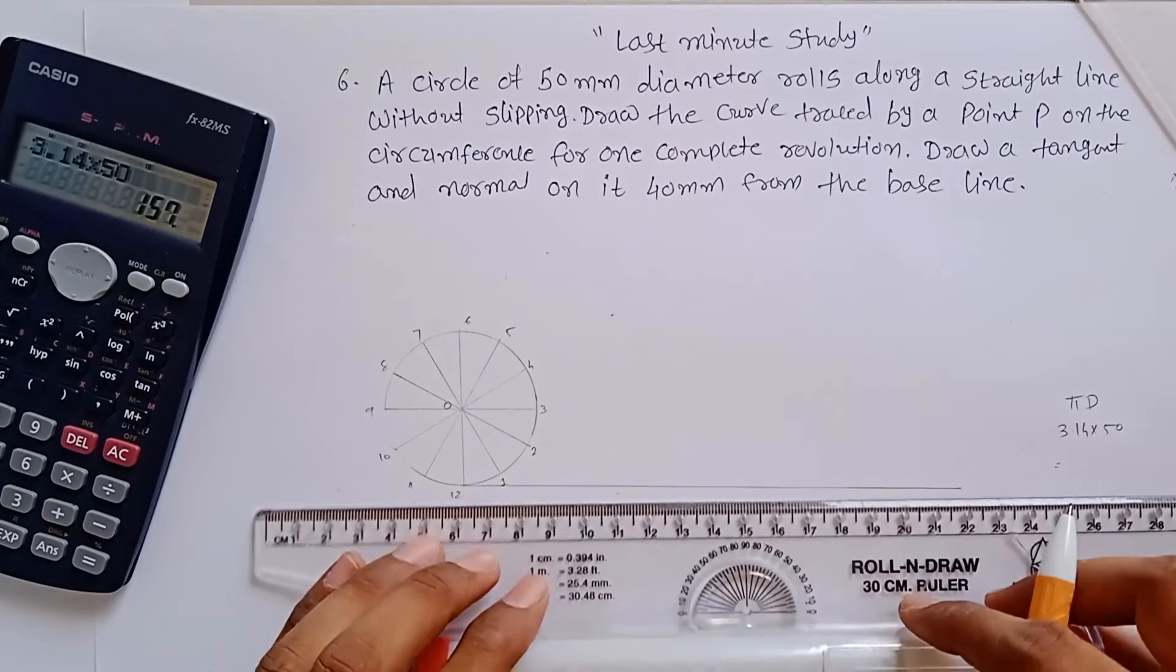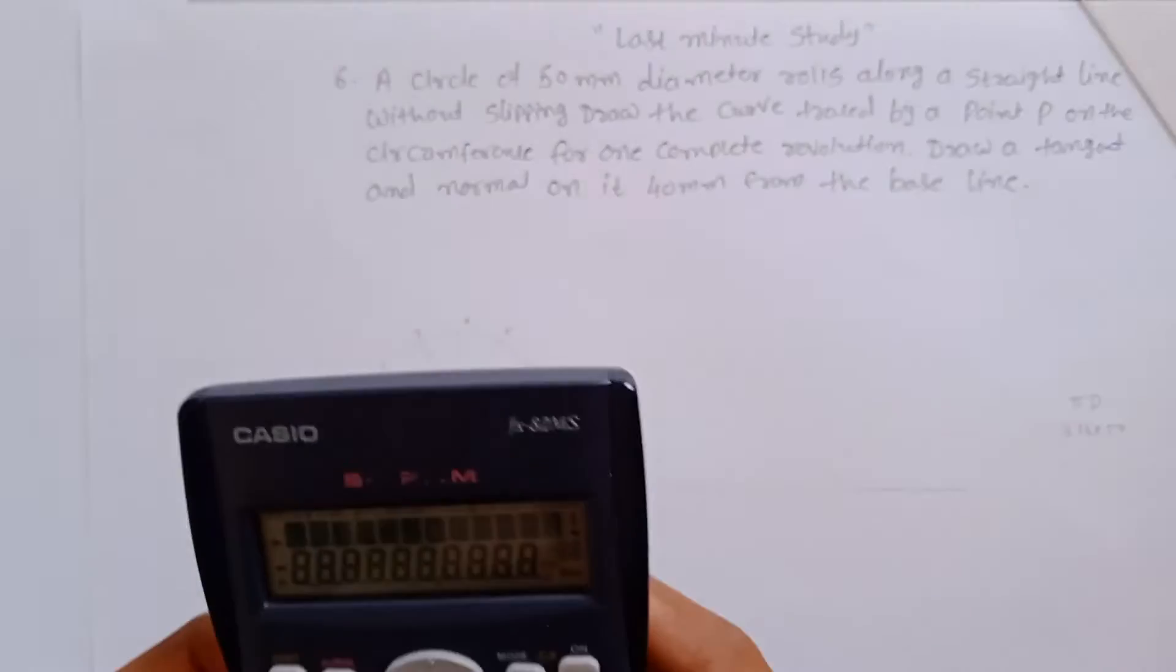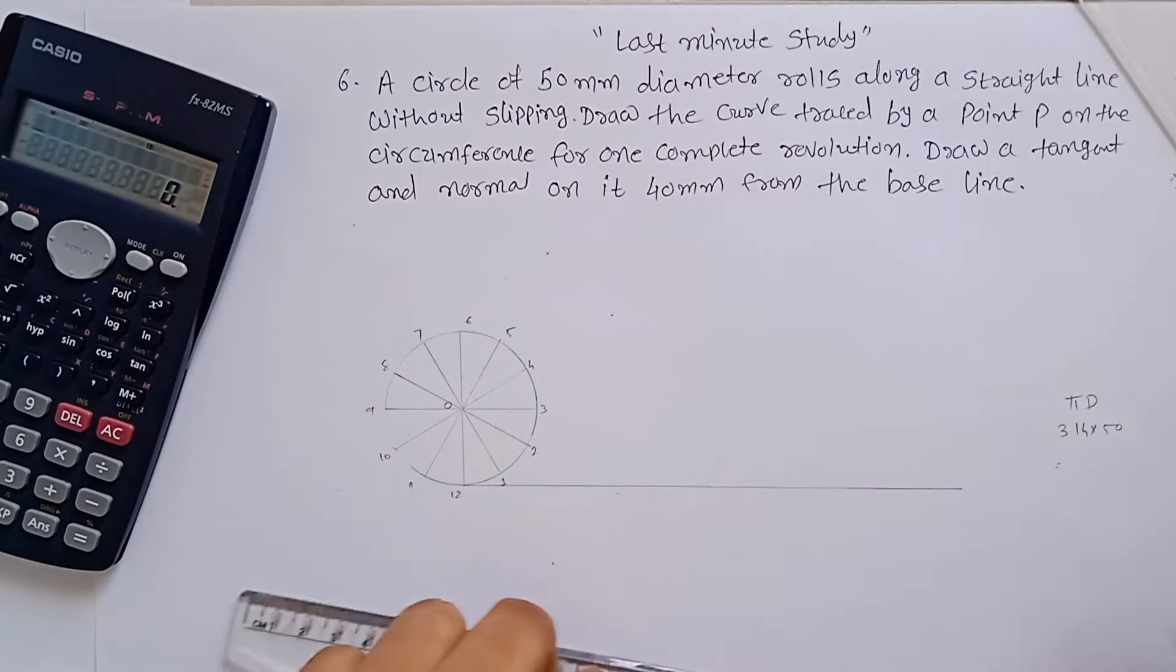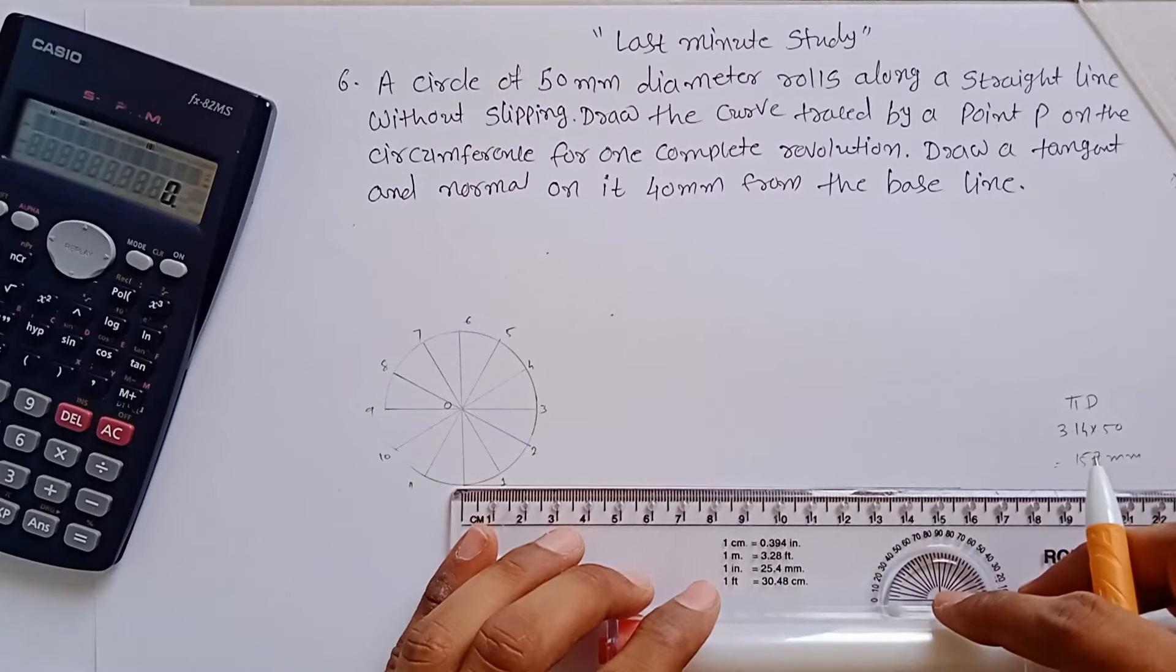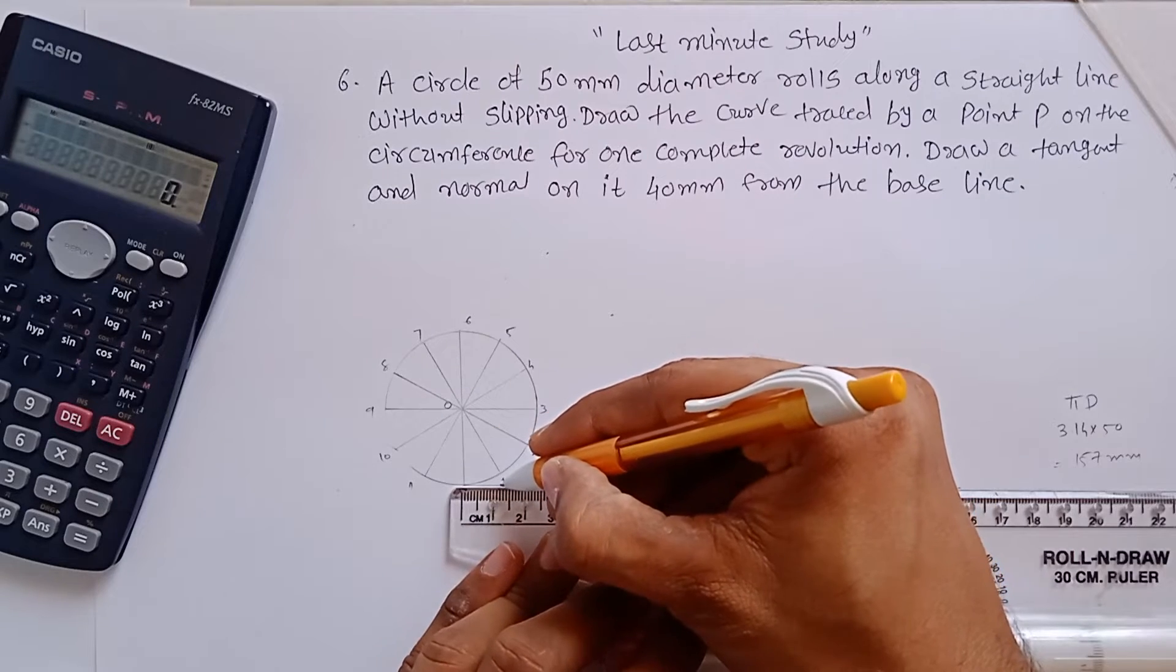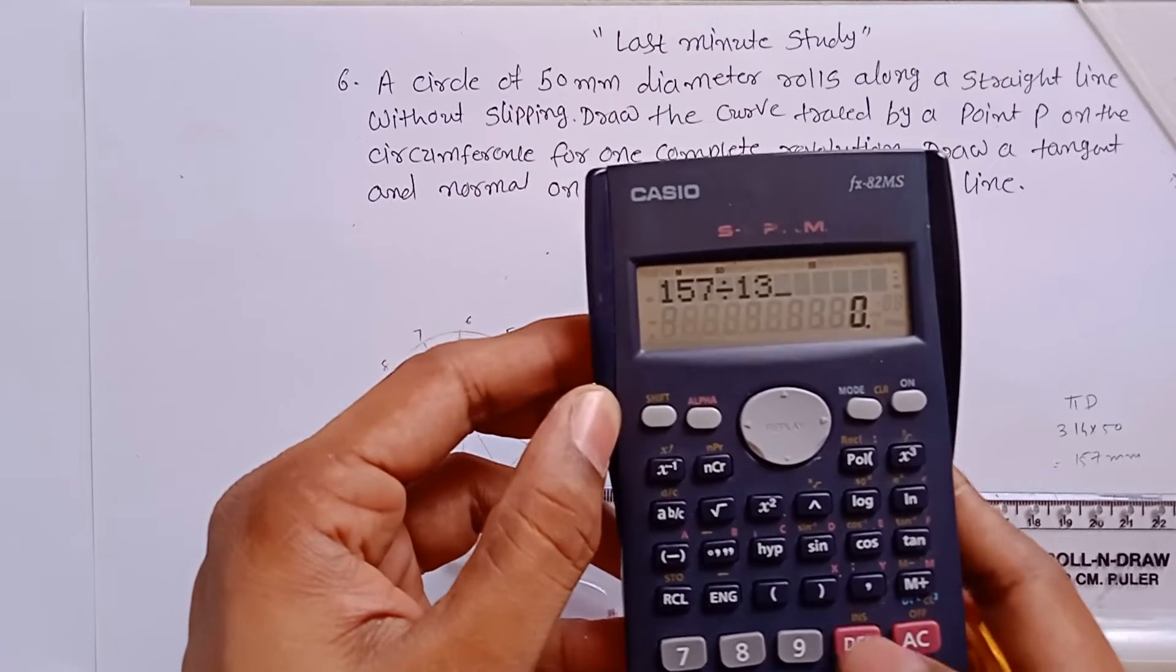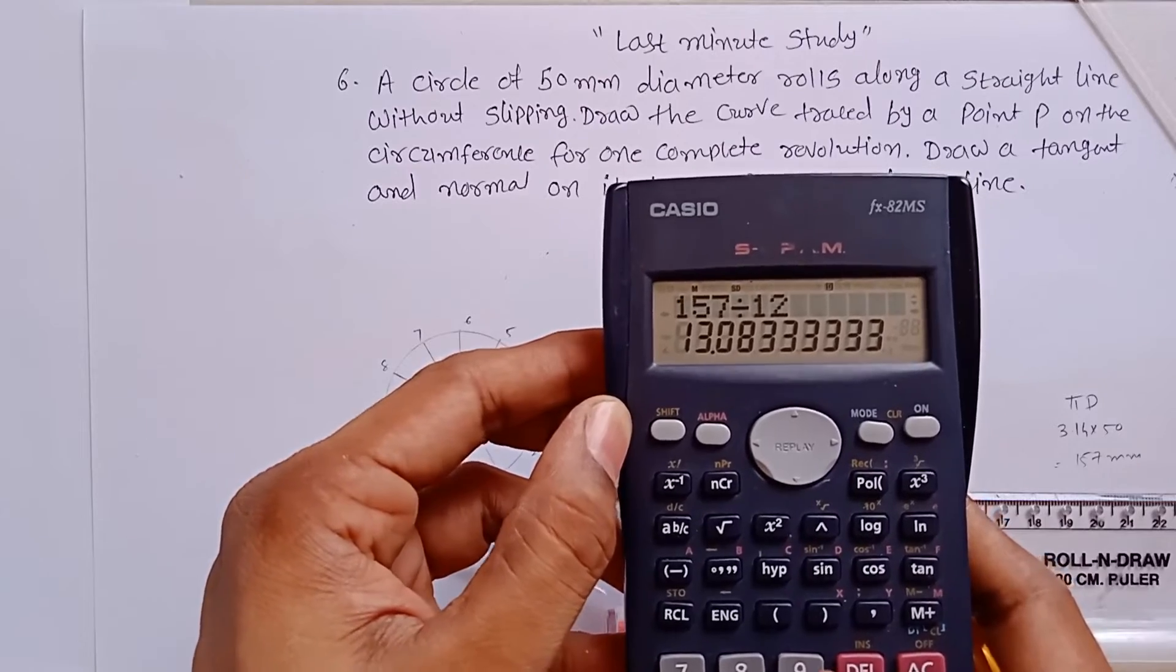This length is πD. Now you have to divide this into 12 equal parts. To do so, just calculate it: divide 157 by 12, so it is nearer to 13. That means 13mm each, so 1.3mm each. If you use 157 divided by 12, it is 13.08. You cannot measure this on the scale.